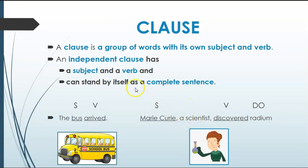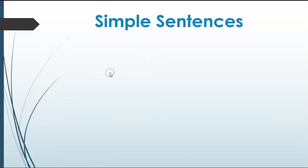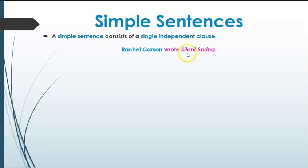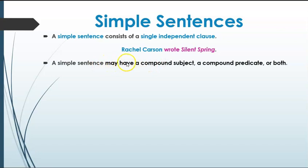Not every clause is a complete sentence. We do have clauses that are not complete sentences and are paired with an independent clause to make a complete sentence. A simple sentence consists of a single independent clause. For example, 'Rachel Carson wrote Silent Spring' — this has a subject, a verb, and a direct object, and it is a complete thought that can stand independently on its own.